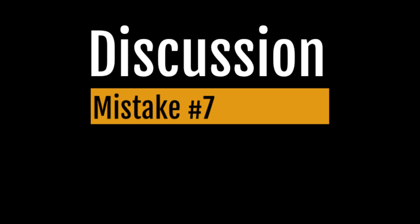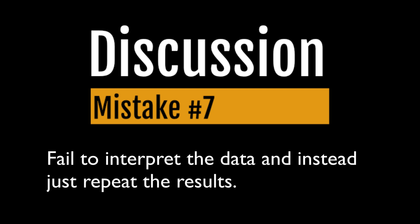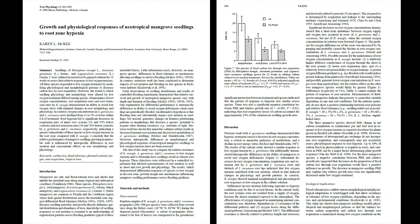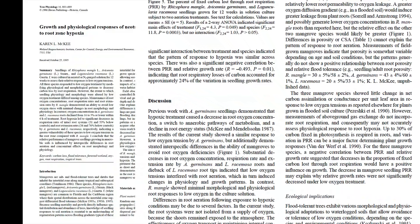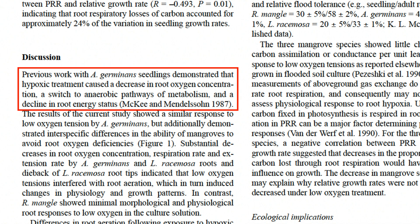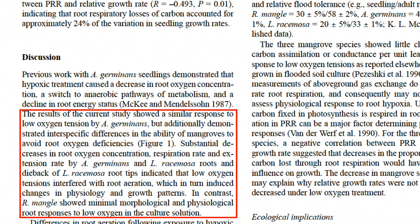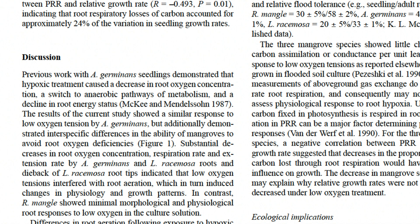A common mistake inexperienced writers make in the discussion is to fail to interpret the data and instead just repeat the results with a few citations thrown in here and there. The discussion is where you explain your data and compare it to previous work. Let's look at the discussion of the root aeration study. It begins by describing previous work with one of the three species that showed a decline in root oxygen concentrations under hypoxic solution culture, and then points out that the results of the current study agree with respect to the species A. germinans. But the new data show interspecific differences in the ability of mangrove seedlings to avoid root oxygen deficiencies, and root oxygen deficiencies have subsequent consequences for physiology and growth. There is some repetition of the results, but it is done in conjunction with interpretation of the data in comparison with previous work.